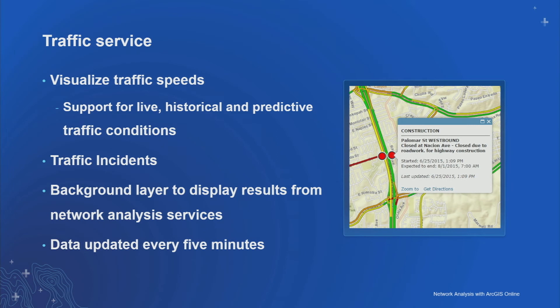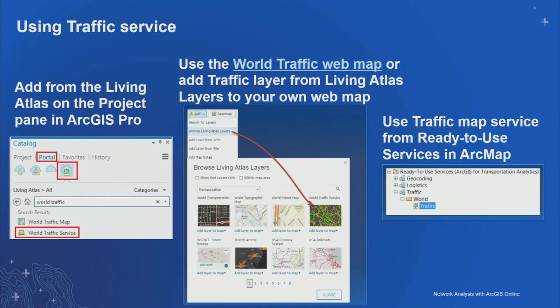The traffic service allows you to visualize traffic speeds as well as traffic incidents. It acts as a good operational layer on which you can show your analysis results. For example, if a route is not using typical streets, adding the traffic layer might show there is congestion. The traffic service is backed by Esri's data feed, updated every five minutes throughout the day. In ArcGIS Pro, you find it under the Catalog pane in the Living Atlas tab. In ArcMap, it's accessible under the Ready-to-Use Services node.